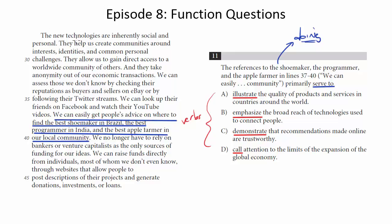The new technologies are inherently social and personal. They help us create communities around interests, identities, and common personal challenges. They allow us to gain direct access to a worldwide community of others, and they take anonymity out of our economic transactions. We can assess those we don't know by checking their reputations as buyers and sellers on eBay, or by following their Twitter streams. We can look up their friends on Facebook and watch their YouTube videos. We can easily get people's advice on where to find the best shoemaker in Brazil, the best programmer in India, and the best apple farmer in our local community. We no longer have to rely on bankers or venture capitalists as the only sources of funding for ideas. We can raise funds directly from individuals, most of whom we don't even know, through websites that allow people to post descriptions of their projects and generate donations, investments, or loans.